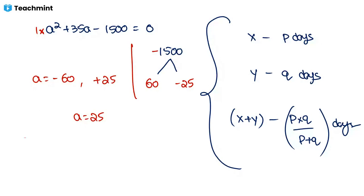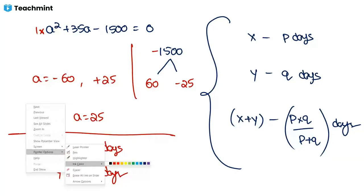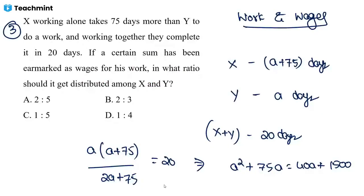When a = 25, Y takes 25 days and X takes 100 days to complete the work. The ratio of timings is 4:1. Since time is inversely proportional to efficiency, the efficiency ratio of X to Y is 1:4. Payment depends on work done and efficiency, so the wages are distributed in the ratio 1:4.